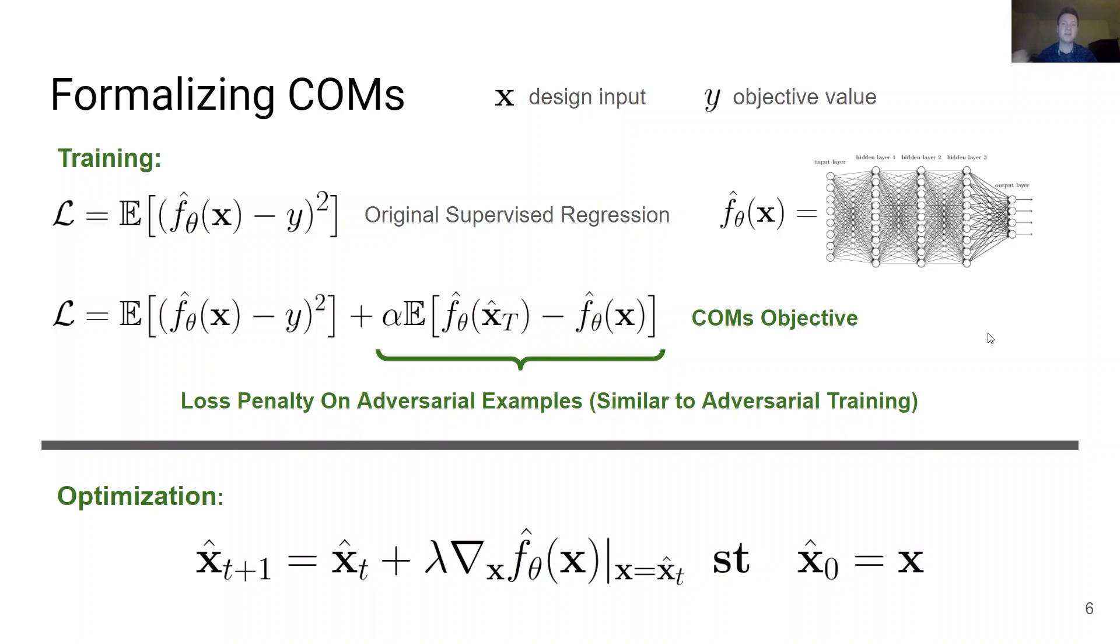Evaluating COMs is then as simple as taking k steps of standard gradient descent on the model's predictions to find a design X that solves the optimization problem.